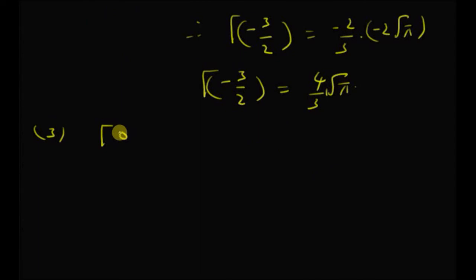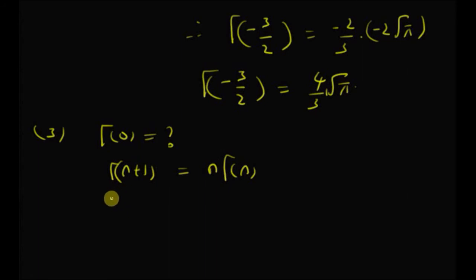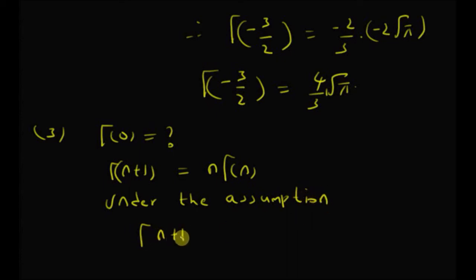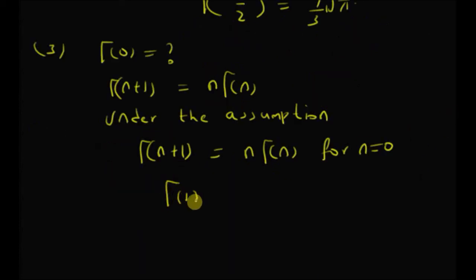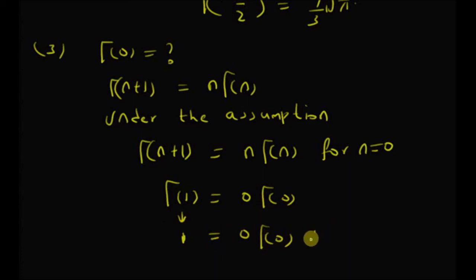The third one is gamma of 0. Usually gamma of n plus 1 is equal to n times gamma of n for values of n not equal to 0. However, under the assumption that gamma of n plus 1 is equal to n times gamma of n for n equal to 0, then we have gamma of 1 is equal to 0 times gamma of 0. Since gamma of 1 is equal to 1, this should be equal to 0 times gamma of 0. Therefore, gamma of 0 should be infinite.